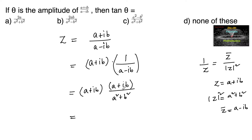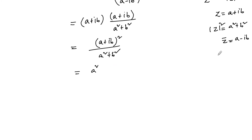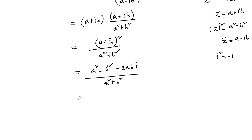So let us multiply (a-ib) into (a-ib), that is (a-ib) whole squared upon a squared plus b squared. On simplifying, we can write a squared plus i squared b squared. Since i squared is equal to minus 1, we get a squared minus b squared plus 2ab·i, all upon a squared plus b squared.